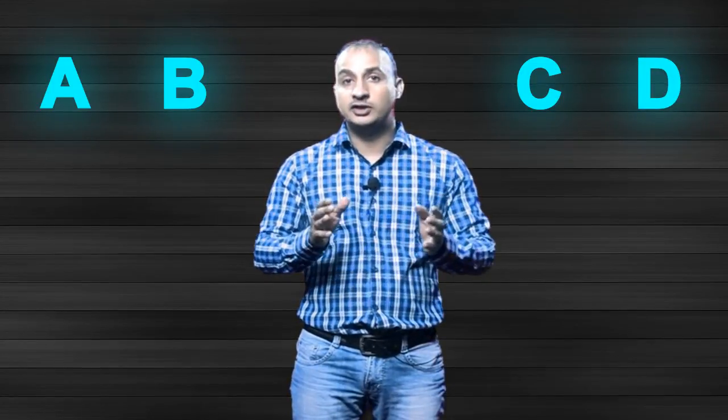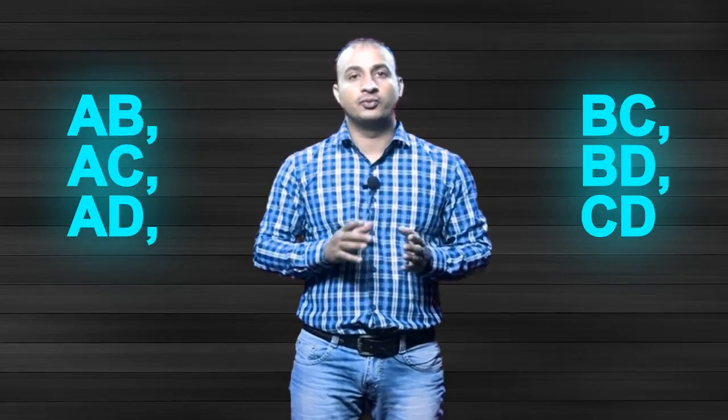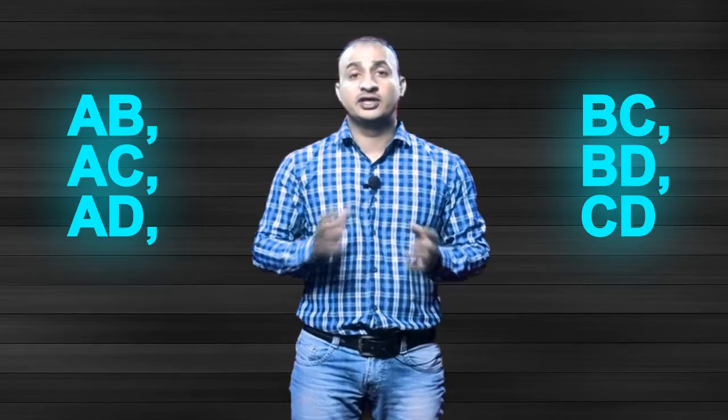You can select AB, AC, or AD, or BC, BD, or CD. So there are total six choices out of four. How can you find this with the concept of combination?